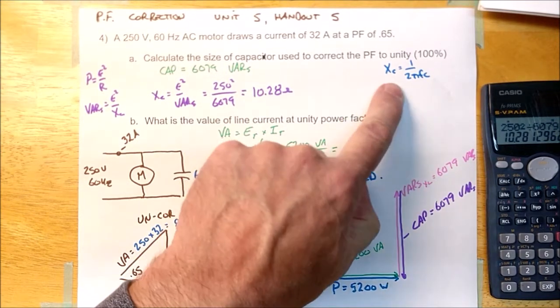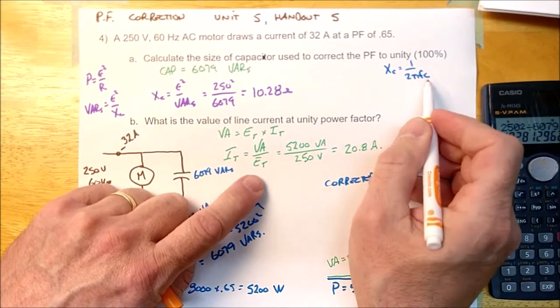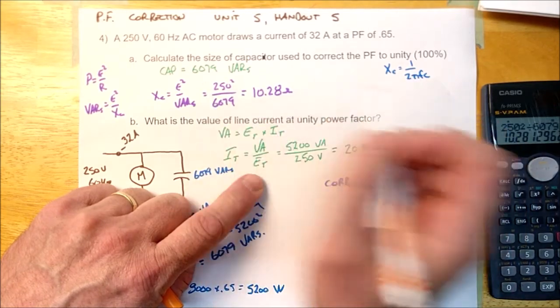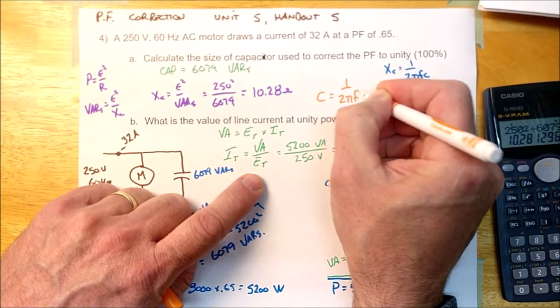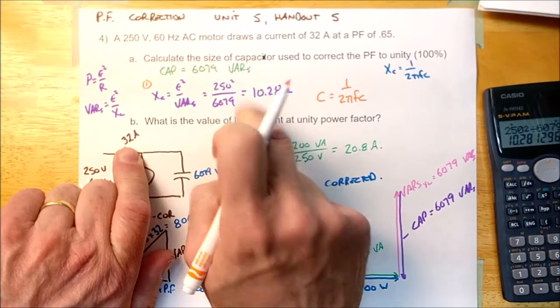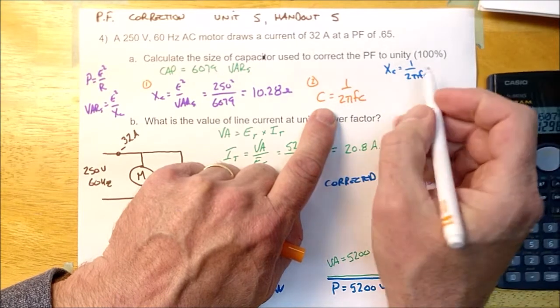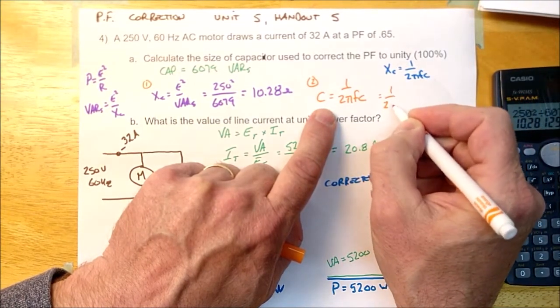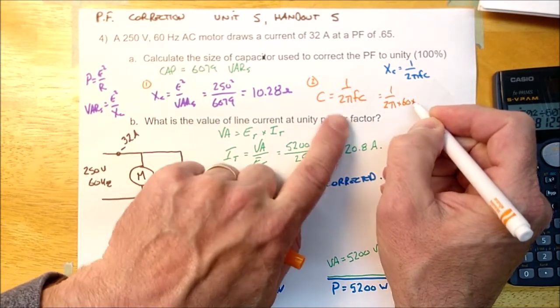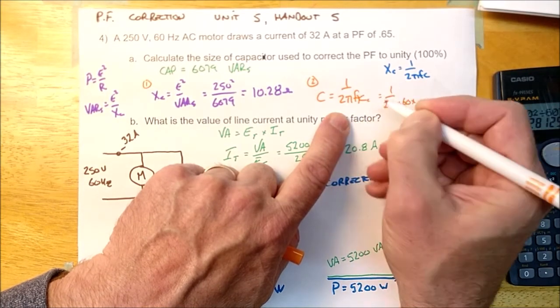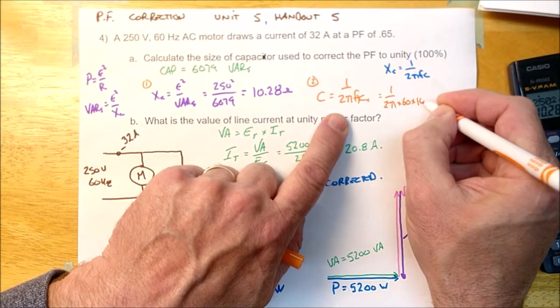And now that we know that, we're going to figure out this here. And we have to transpose this formula as well for C, because we want the answer in farads or microfarads, actually. So if we transpose this formula, it's going to be C is equal to 1 over 2πFXC. So this is kind of step one, figure out how many ohms it is. Step two, figure out how many farads it is.